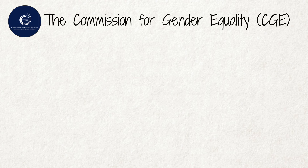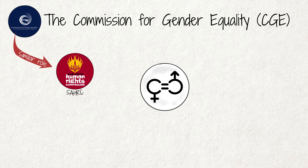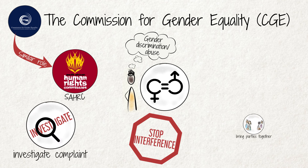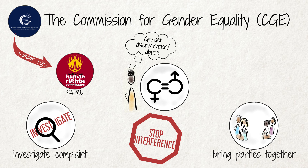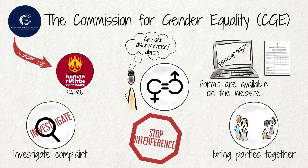The Commission for Gender Equality. The Commission for Gender Equality plays a similar role to the SAHRC but specifically deals with gender-related rights abuses. Anyone can lodge a complaint alleging gender discrimination or abuse, and the Commission can help in the same way as the SAHRC. The forms to lodge a complaint are available on the website of the Commission for Gender Equality.